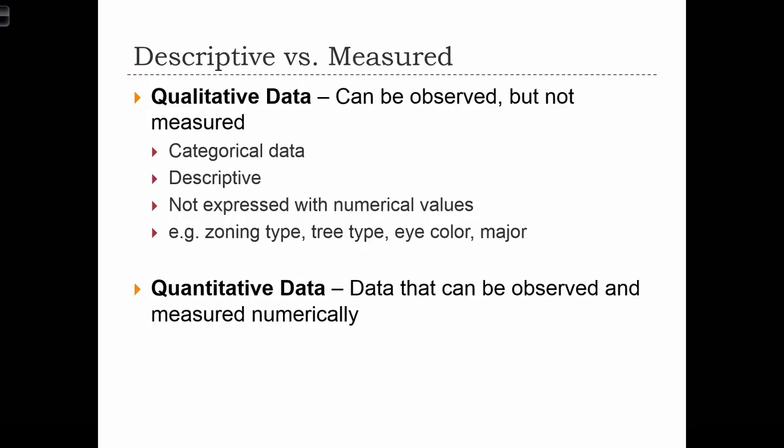We are going to now spend the next five minutes or so talking about level of measurement. The first way that we are going to categorize our different data are into qualitative and quantitative data. Qualitative data can be observed, but they are not measured, and they're often called categorical data. Qualitative data describes some kind of attribute or characteristic about our observational unit without actually taking a measurement of it. So these are not expressed with numerical values, and they often define some kind of type or kind. So a zoning type, a tree type, an eye color, or the major of a student in our undergrad program.